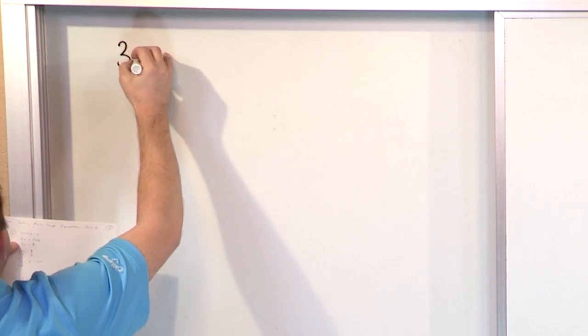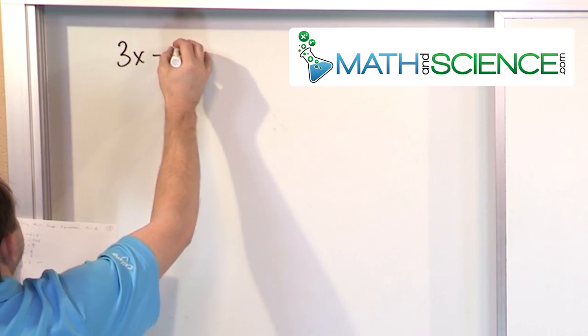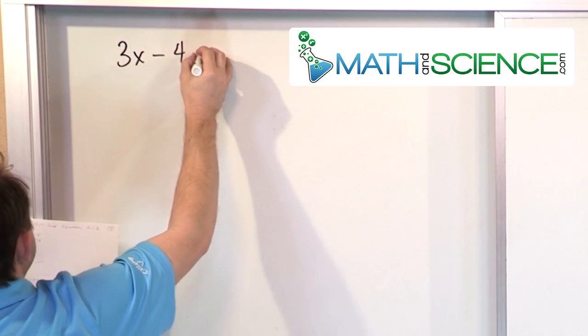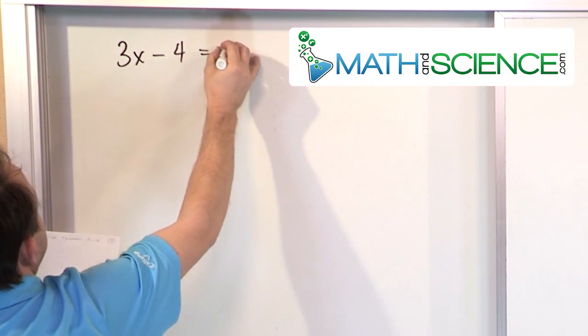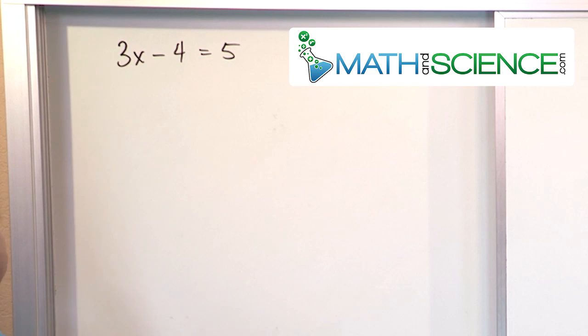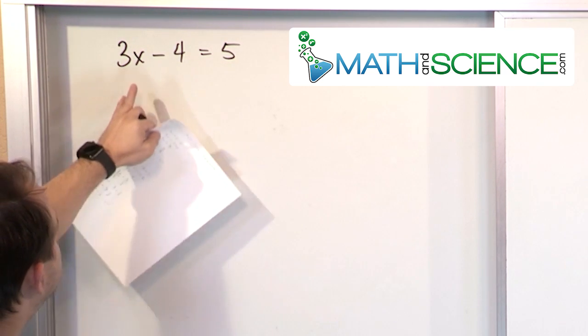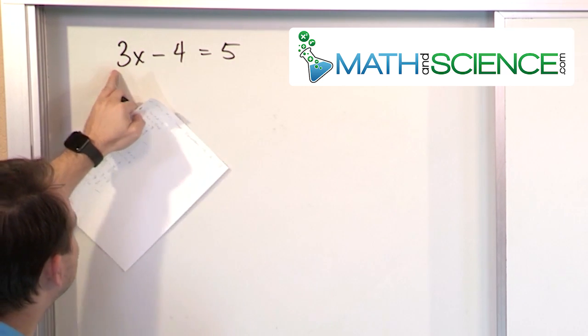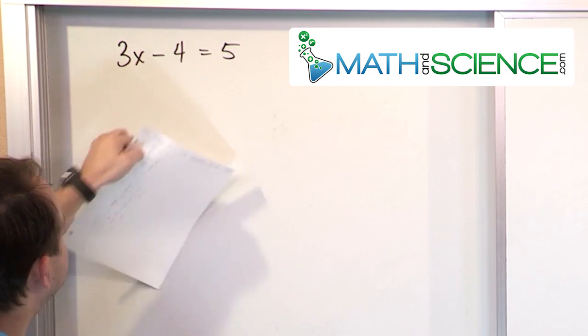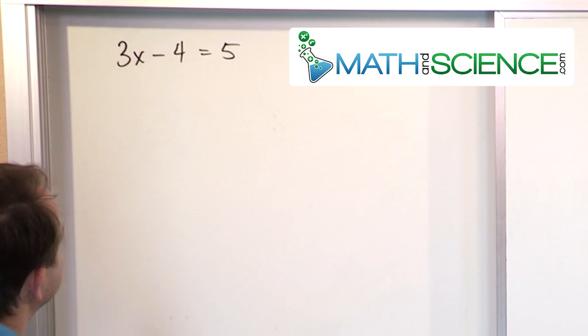Let's say we have 3x minus 4 equals 5. We want to get x by himself, but he's wrapped up in a multiplication here.